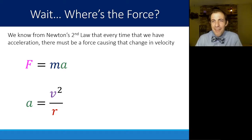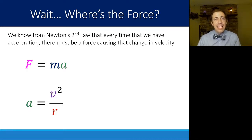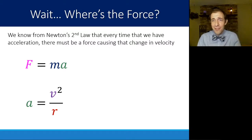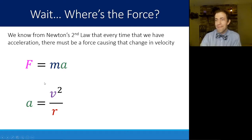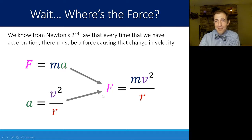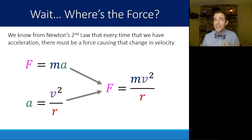You may have heard the term centripetal force. If Newton's second law F = ma is to be believed, if there is ever acceleration there must be some net force causing that change in velocity — an object won't change direction on its own. So we can find the centripetal force causing circular motion by combining equations: F = ma, and a = v²/r, giving us F = mv²/r. This is the most important equation of this unit — it tells us the force required to make something move in a circle.